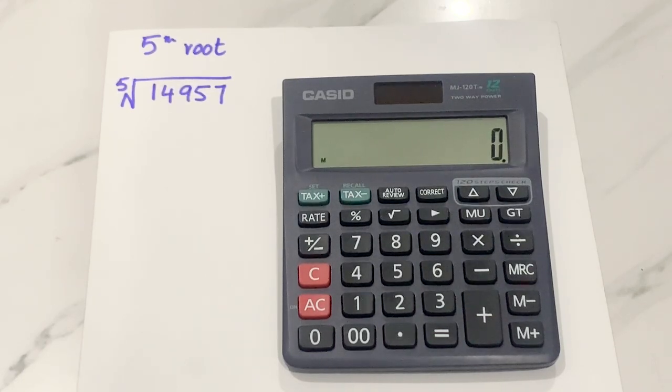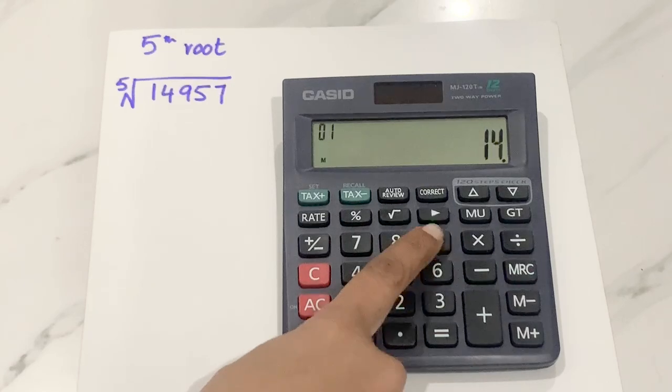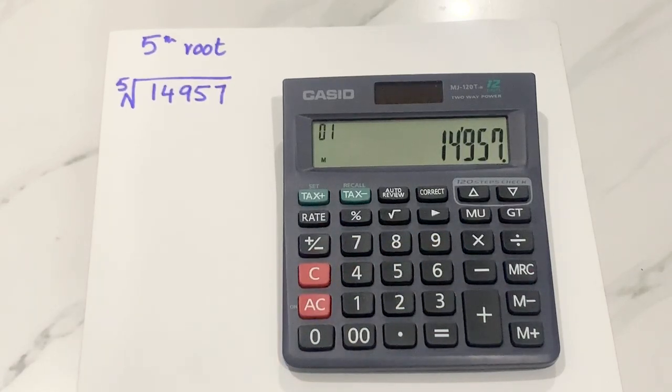So let's start. Let's suppose I have a number that is 14,957 and I want to find out the fifth root of this number. So in the first step,